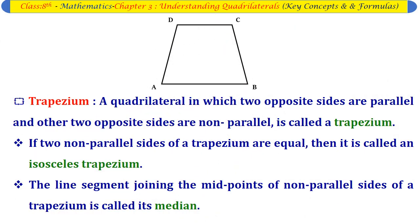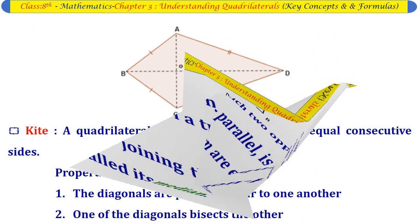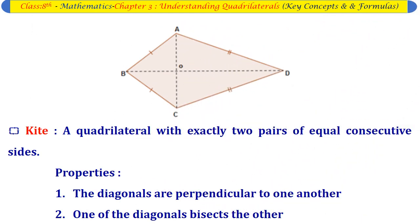Trapezium: A quadrilateral in which two opposite sides are parallel and the other two opposite sides are non-parallel. If the two non-parallel sides of a trapezium are equal, it is called an isosceles trapezium. The line segment joining the midpoints of the non-parallel sides of a trapezium is called its median. Kite: A quadrilateral with exactly two pairs of equal consecutive sides. Properties: the diagonals are perpendicular to one another, and one diagonal bisects the other.